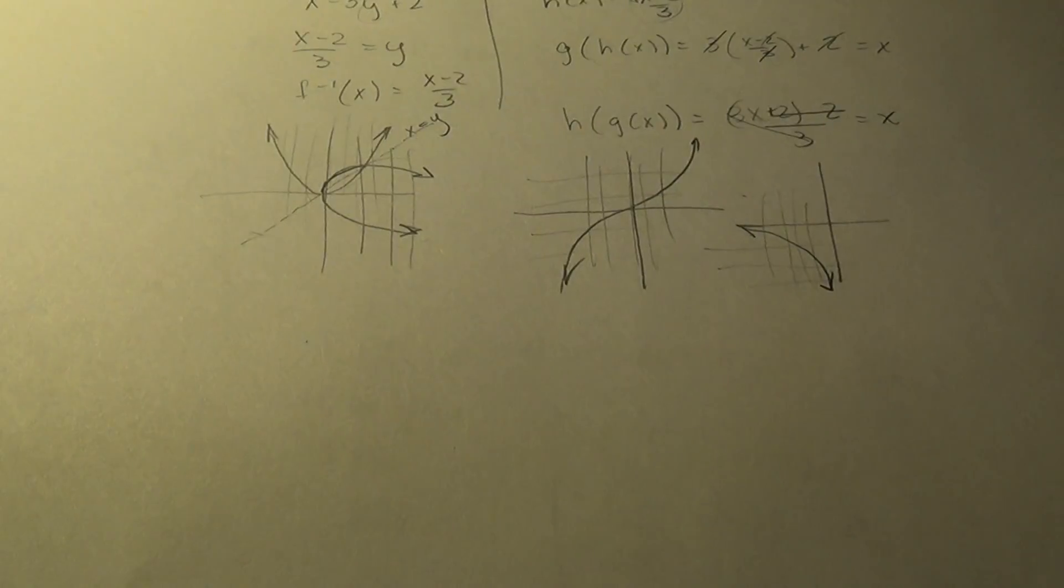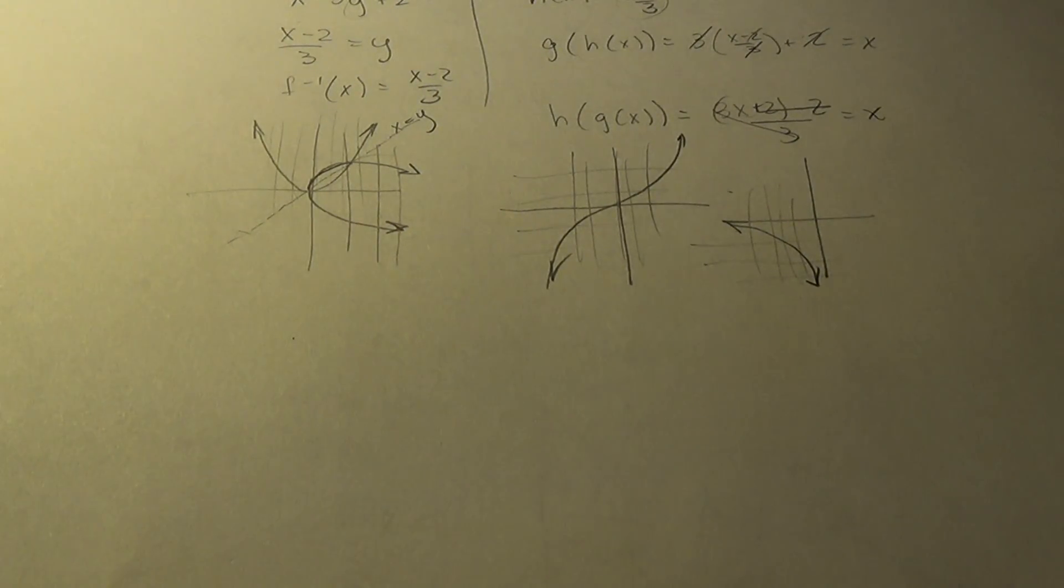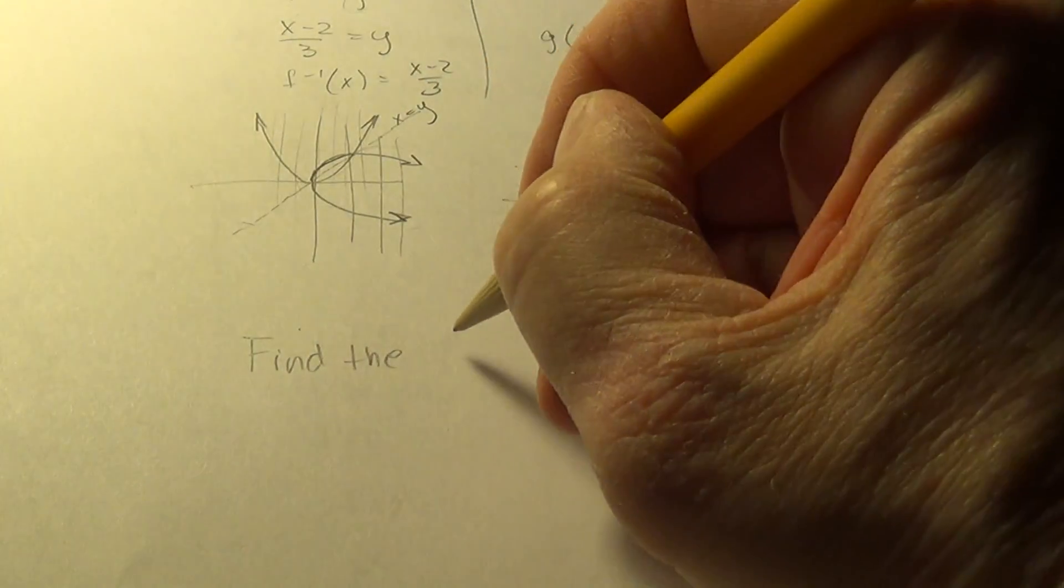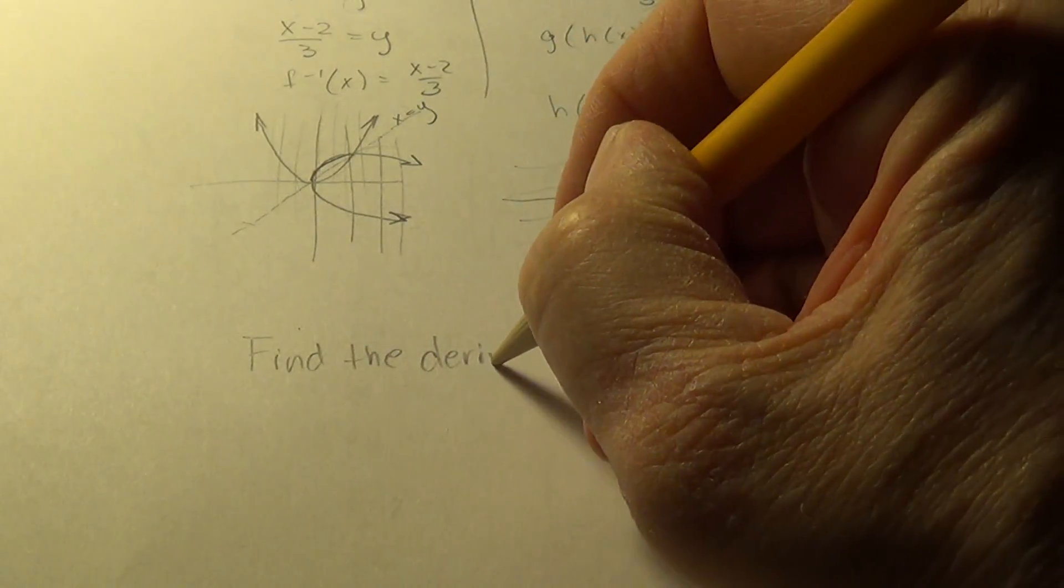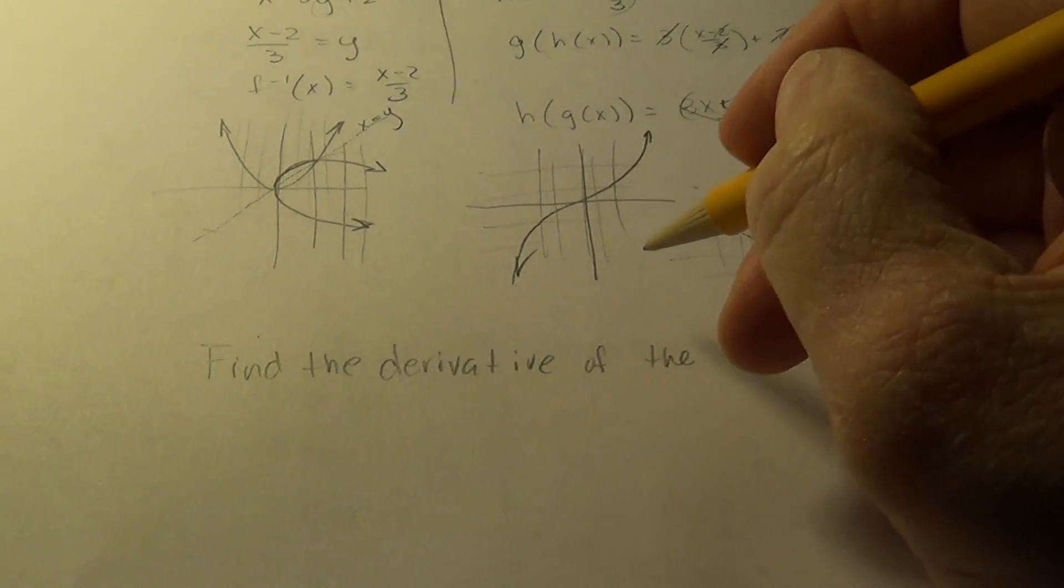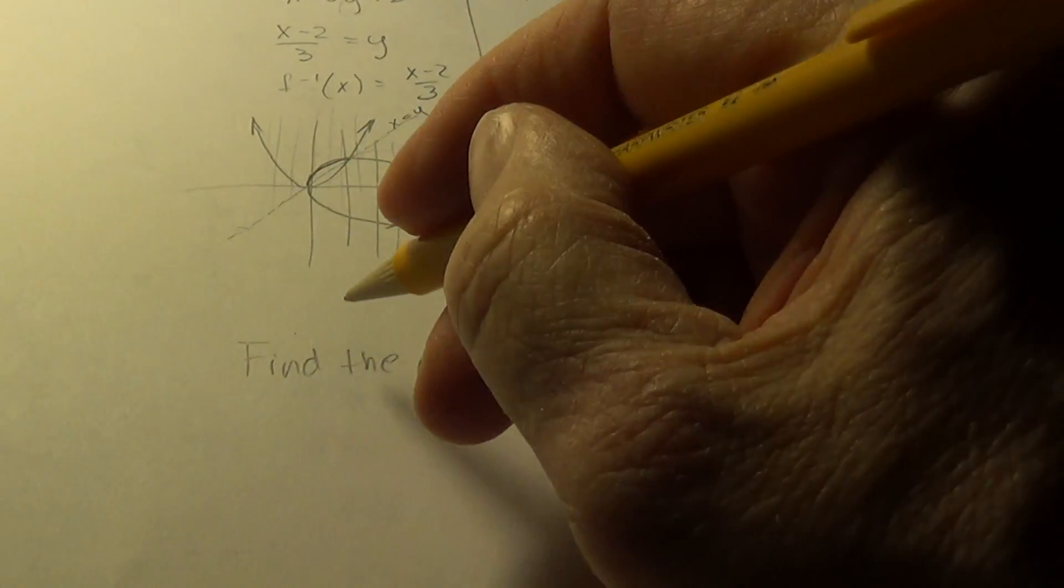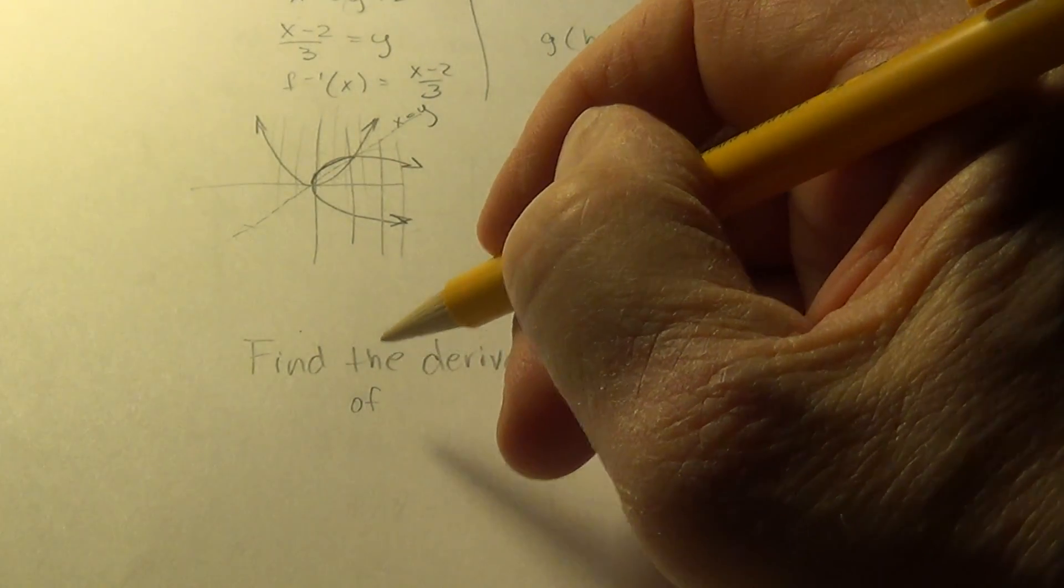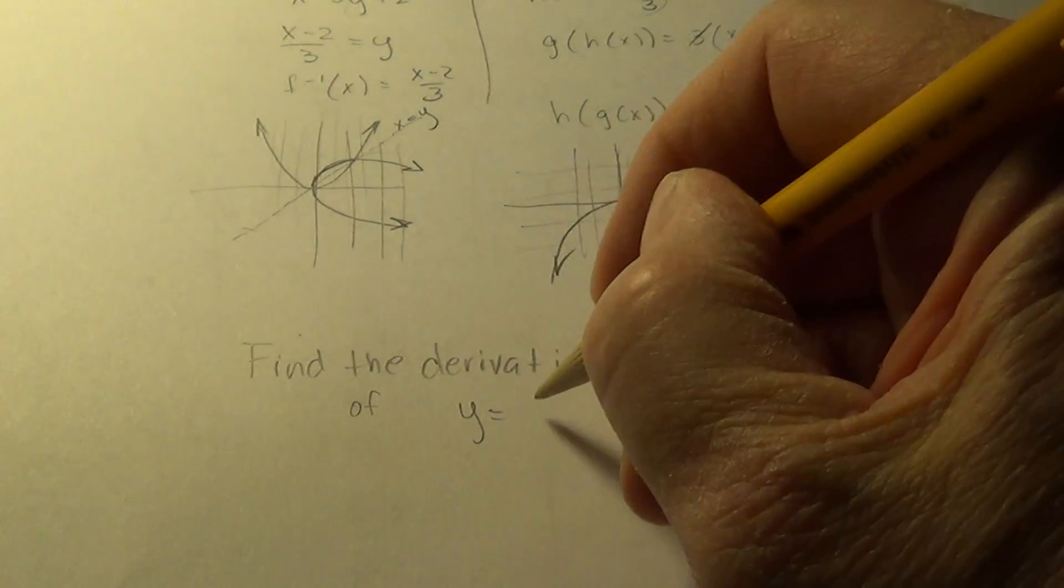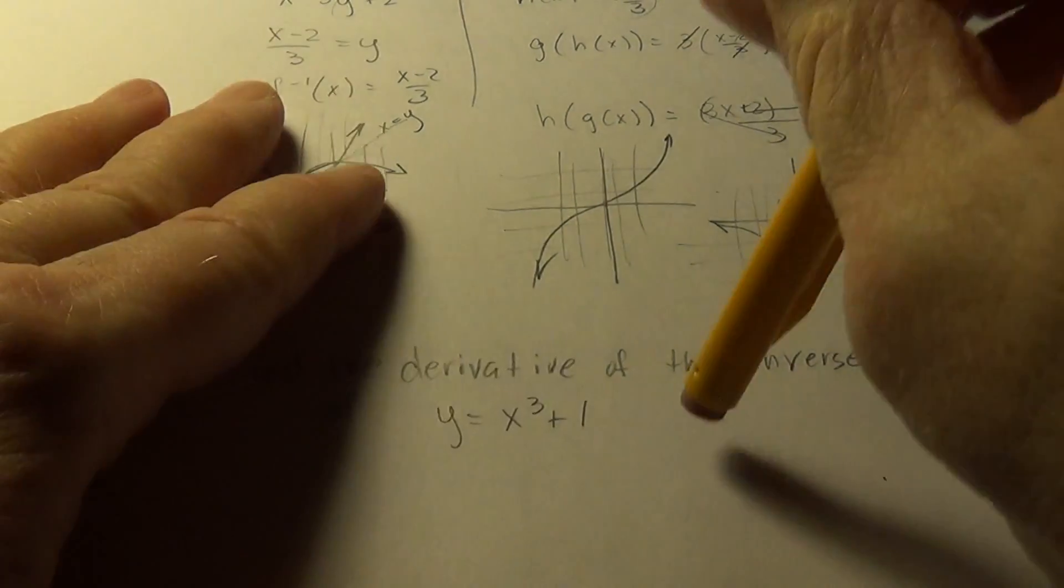Now I'm going to find the derivative of, let's say y. Find the derivative of the inverse of y equals x cubed minus 1.